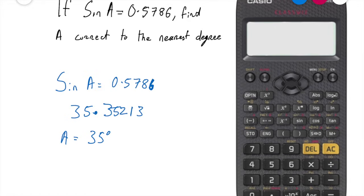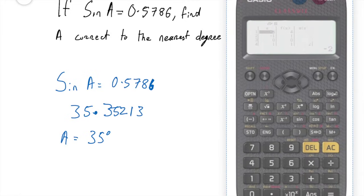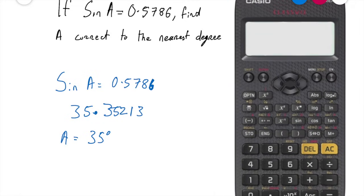So the angle A is 35 degrees. That's it for this video folks. Oh sorry, before I finish I should say if you ask to do the same for cos or tan it's the exact same process. You press shift cos and the number, or for tan it's shift tan and then the number.